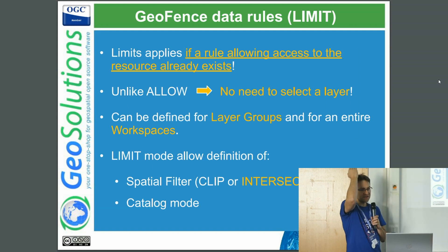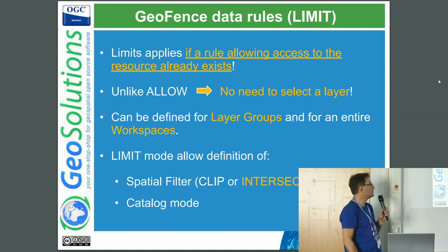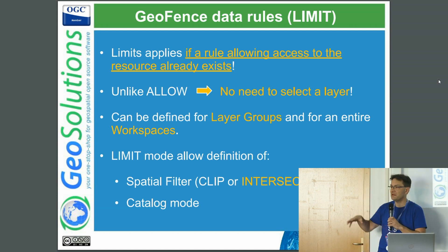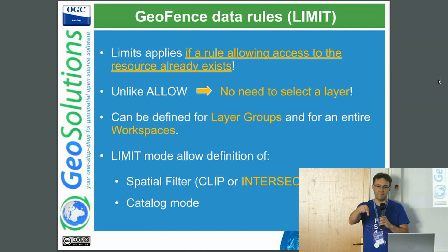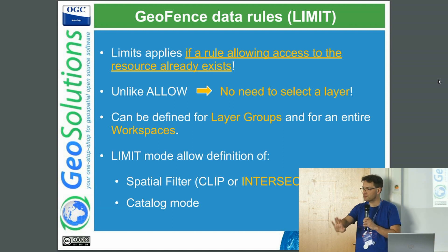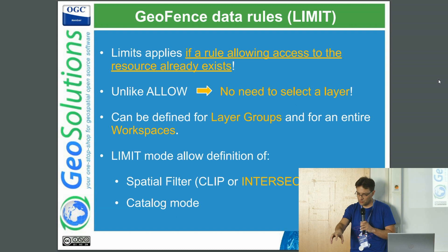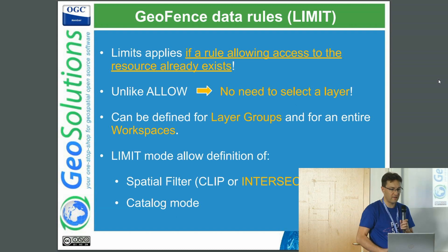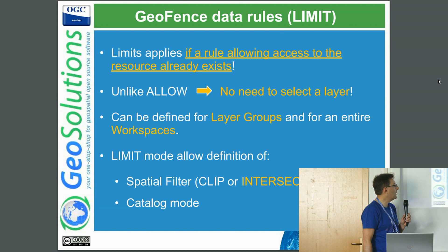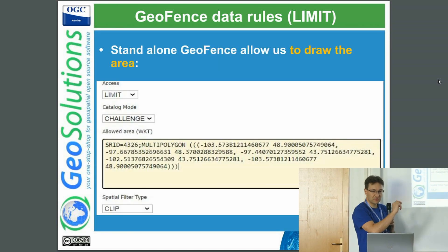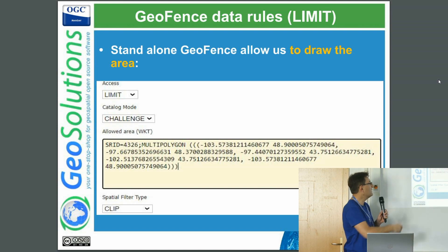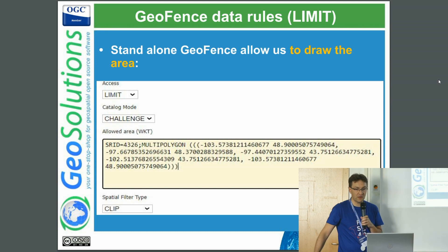You can also write a spatial area filter by providing a polygon and say this user can see — or write — data only in this area. Think about a field collection scenario: you have 10 people going around, each with their own area of collection; you can enable each one to collect only in their area and not do WFS-T anywhere else. You can also control which attributes each user can see or write to. There are also limit rules which allow specifying, at the workspace level, general limitations — for example, anything in this workspace is limited to a particular geographic area.